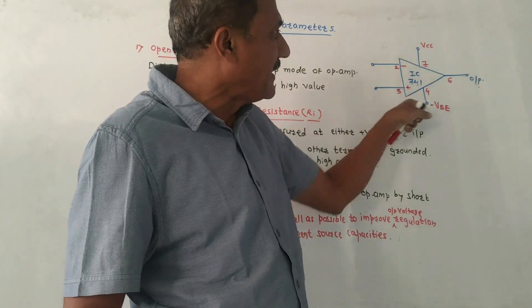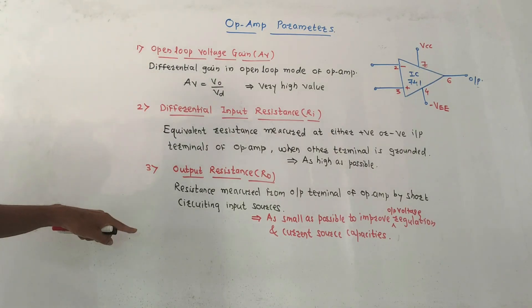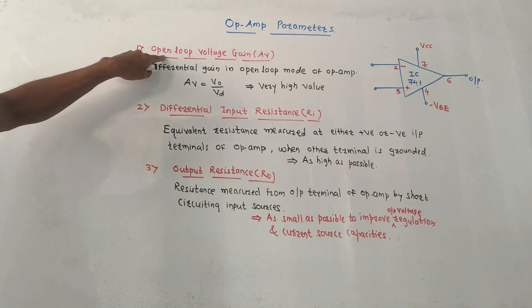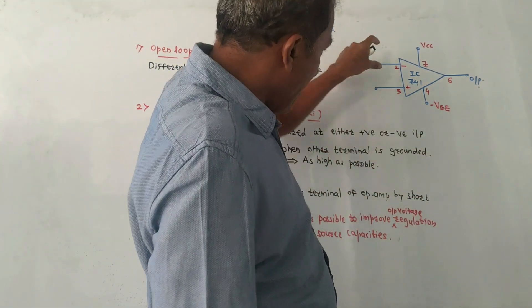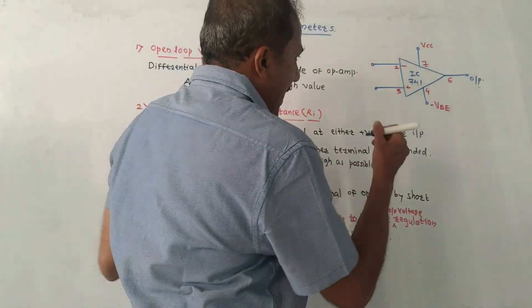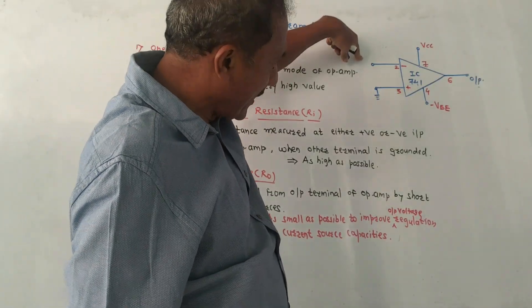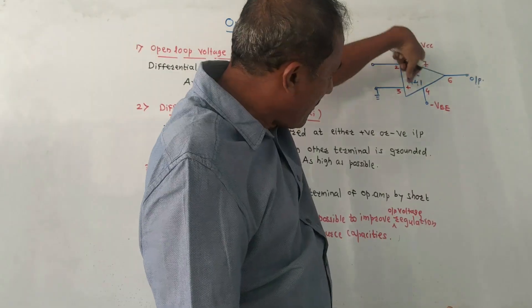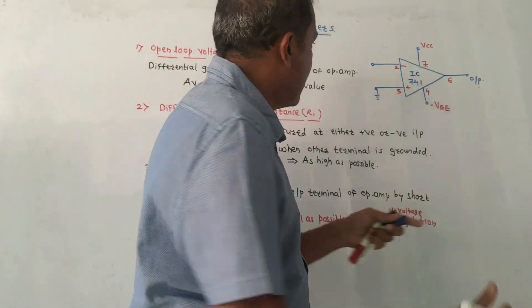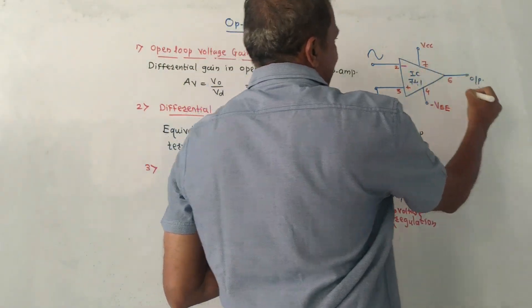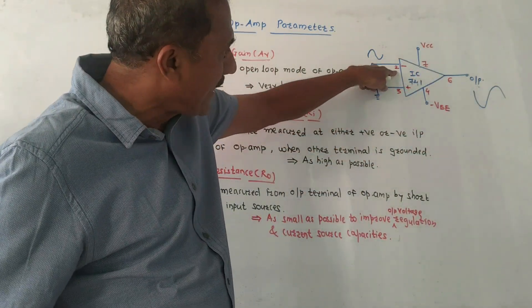Now let us discuss important parameters related to op-amp. The first parameter is open loop voltage gain, denoted by AV. If we ground the positive terminal and apply input to the negative terminal, the op-amp acts as an amplifier and you will get an amplified output, but it will be inverted. So if you apply a signal at the input, at the output you get an inverted waveform, because we are applying input to the inverting terminal.